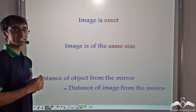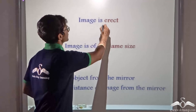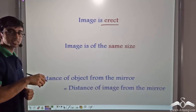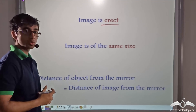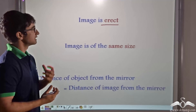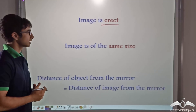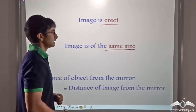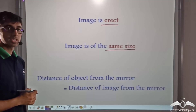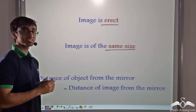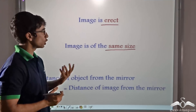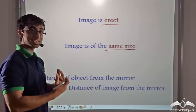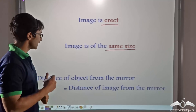We learned that the image that is being formed is erect. As we saw in the case of the chess board, the king piece was erect and the image of the king was also erect. Similarly, we saw it in the case of the boy. We also saw that the image is of the same size. The king that was placed on the chess board had an image which was the same size as the king itself. Also, when the boy stood in front of the mirror, the image of the boy was the same size as that of the boy.